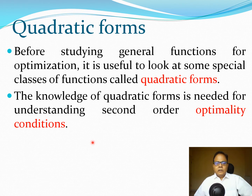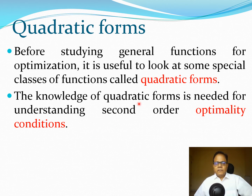Now we move to quadratic forms, which we will then relate back to the Taylor series. In optimization, we consider general non-linear functions, but because it is difficult to build theories around them, most optimization theory is developed for quadratic functions. This quadratic form will be very important in deriving optimization methods.